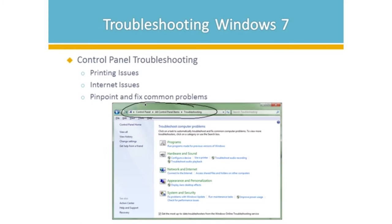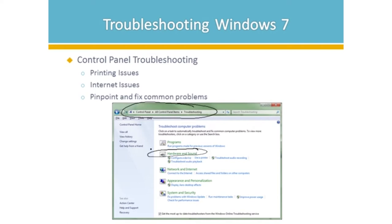What we have here in troubleshooting is Programs, which allows us to look at programs made for previous versions of Windows. We have Hardware and Sound - any device in there so we can troubleshoot how to configure a device. Printers are enormous - that's one of the biggest areas that people tend to troubleshoot or complain about. Here's your audio recording or audio playback. We've taken the most common hardware and sound and put them right up front. But if what you're looking for doesn't seem to be there, click on the heading of Hardware and Sound and you'll get a full list of everything else. The point is to show most common first, then everything.